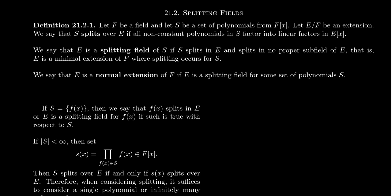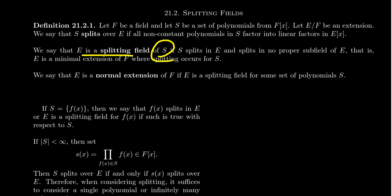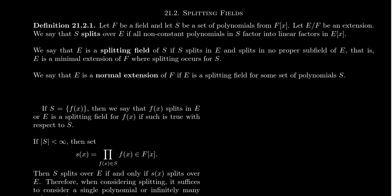Related to the idea of a splitting field is the idea of a normal extension. We say that E is a normal extension of F if E is a splitting field for some set of polynomials over F adjoin X. So splitting fields and normal extensions are essentially the same thing. When we say E is a splitting field, we're referring to some specific set of polynomials S. When we say E is a normal extension, the set of polynomials is implicit. You're a splitting field if and only if you're a normal extension. The terminology 'normal' has something to do with normal subgroups, which we'll discuss in the future.